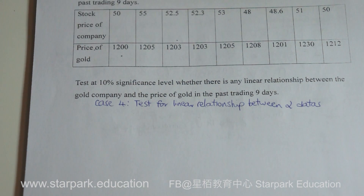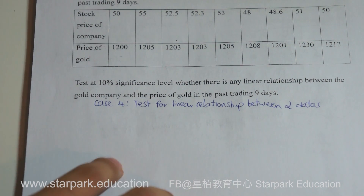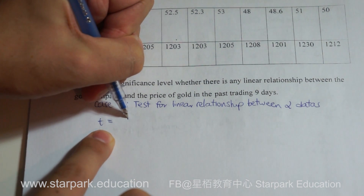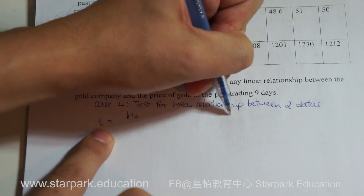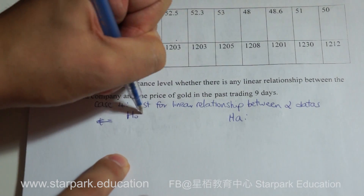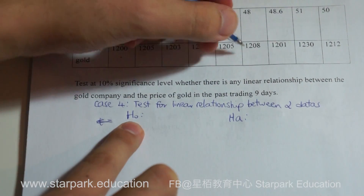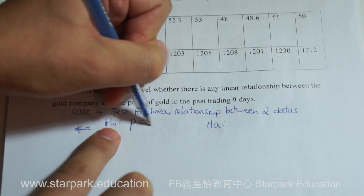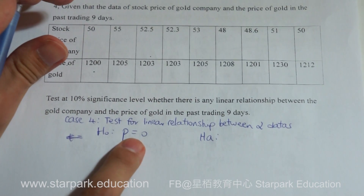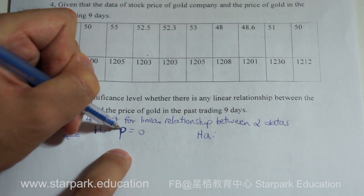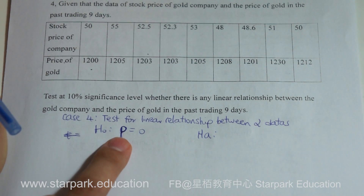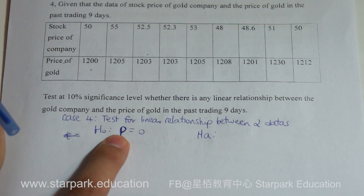In Case 4, we are going to use the t-test. For the t-test, we need to set up two hypotheses. For the null hypothesis, in a linear relationship test it is straightforward. This symbol — which looks like P but is a Greek letter — is called rho, and it is the population correlation coefficient.